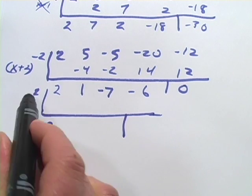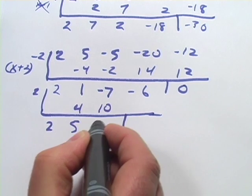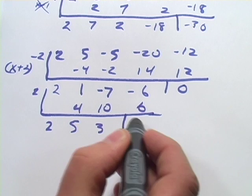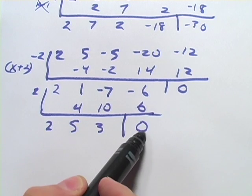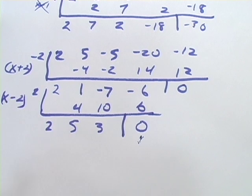So bring the 2 down. 2 times 2 is 4. 4 and 1 is 5. 2 times 5 is 10. And negative 7 is 3. 2 times 3 is 6. I had a hunch. And we've got a remainder of 0. So x minus 2 is also a factor.